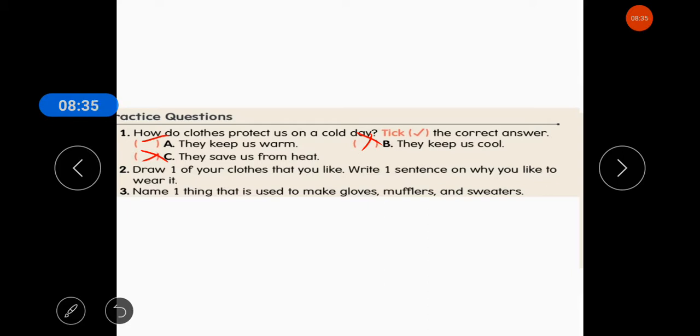Now, second question is. Draw one of your cloth that you like. Write one sentence on why you like to wear it. You have to draw any one cloth. Like, if I choose muffler. I will draw it here. So, I can write muffler protects us from cold. In this way you have to tell about your favorite cloth. Draw it and write the answer.